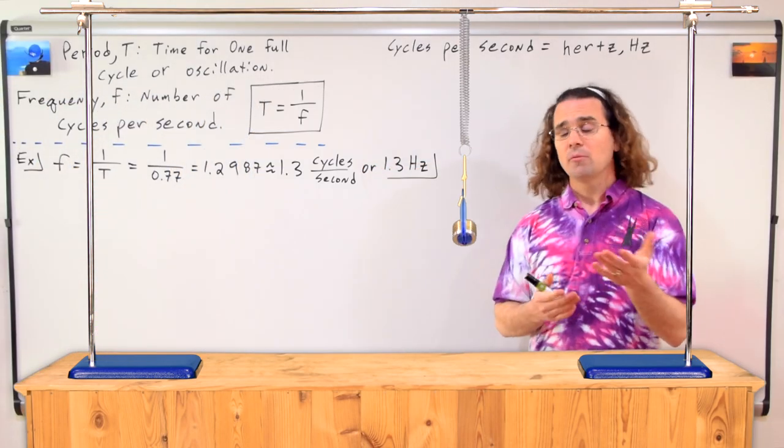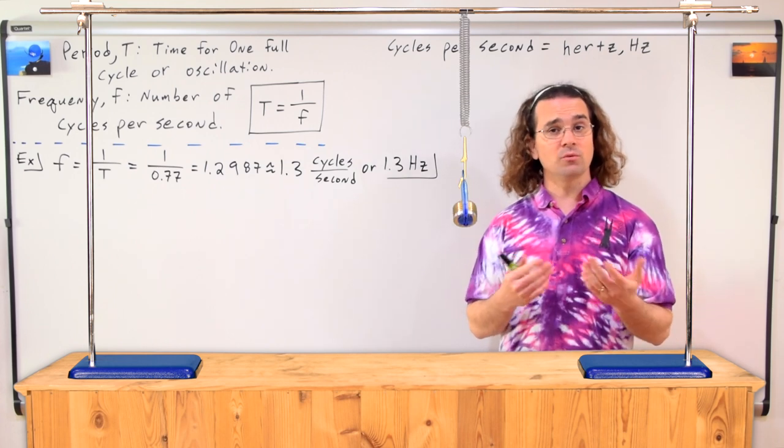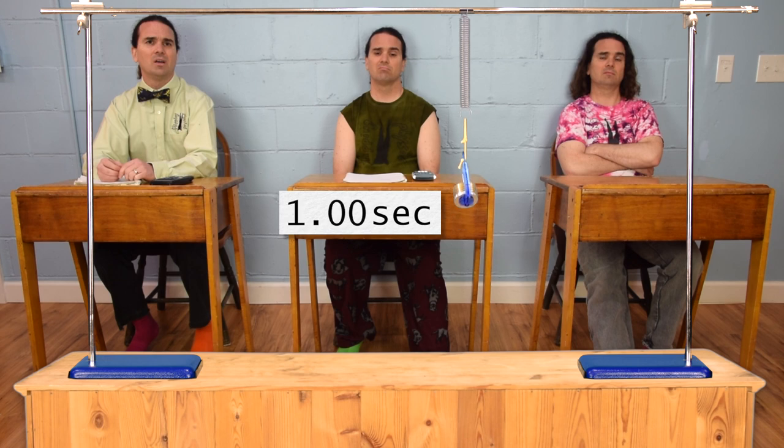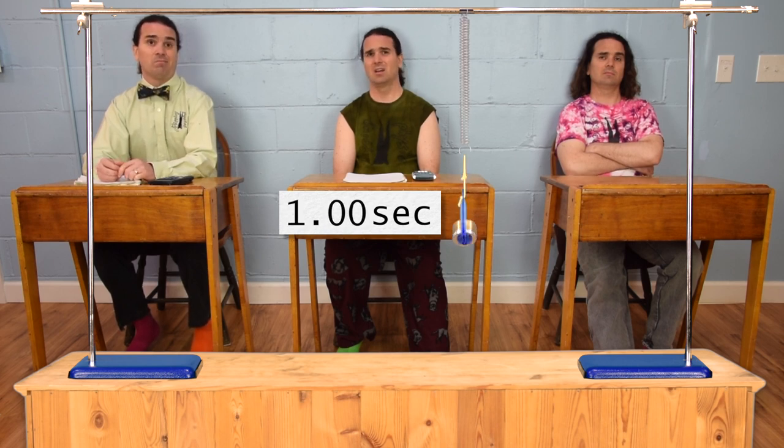Good. Okay, please watch as the mass goes through 1.3 cycles in one second. That is really hard to see. Yeah, how do we know that is 1.3 cycles? That would be the same as 6.5 cycles in five seconds.